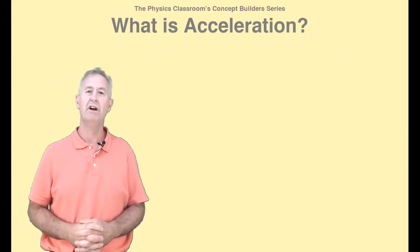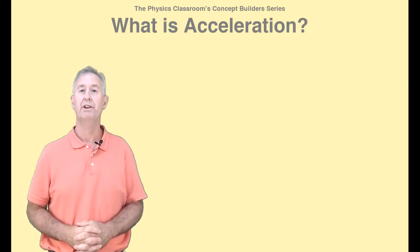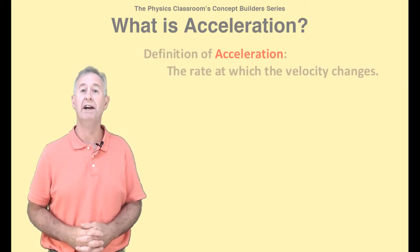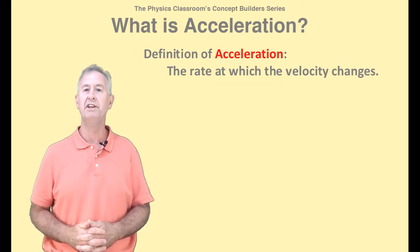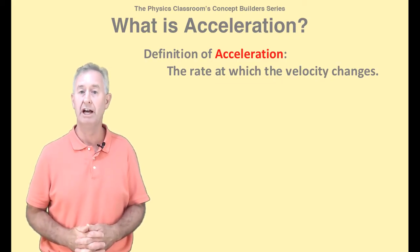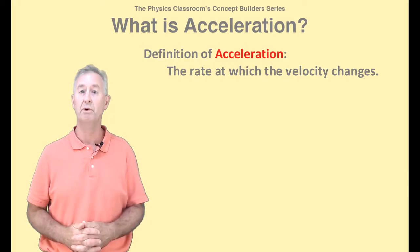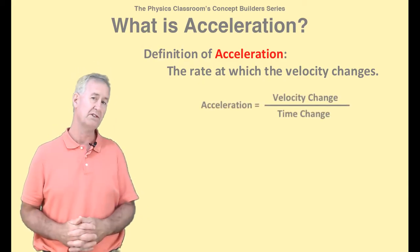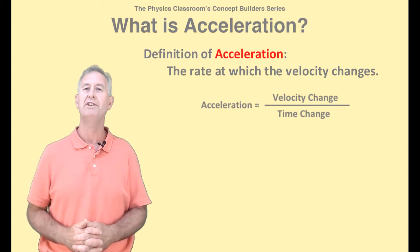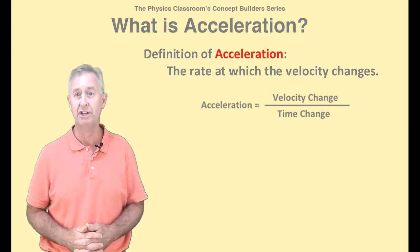Accelerating objects are described as having an acceleration. The quantity acceleration is defined as the rate at which the velocity changes. We can calculate the acceleration if we know the change in velocity of an object, and the time over which that velocity changed. We would use an equation that looks like this: acceleration equals change in velocity, divided by change in time.